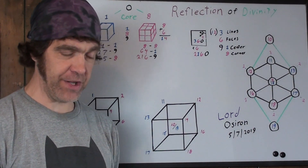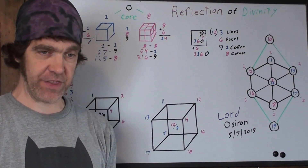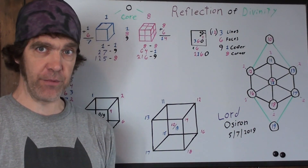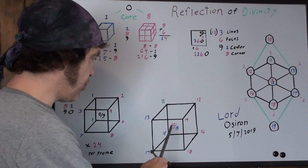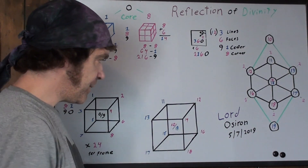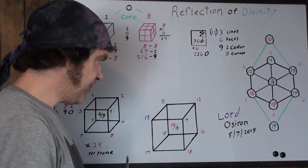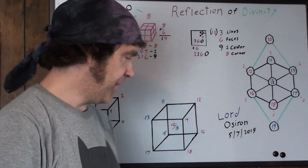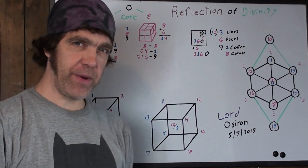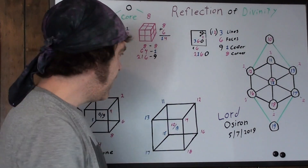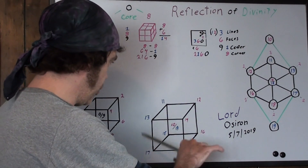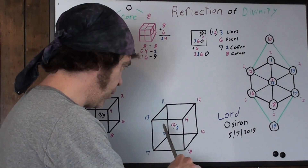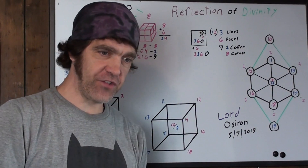It even does the same thing when you jump into triple digits — any number. This goes to infinity, and it shows the reflection of itself all the time. What's really amazing about this is that it shows the reflection of itself with itself.